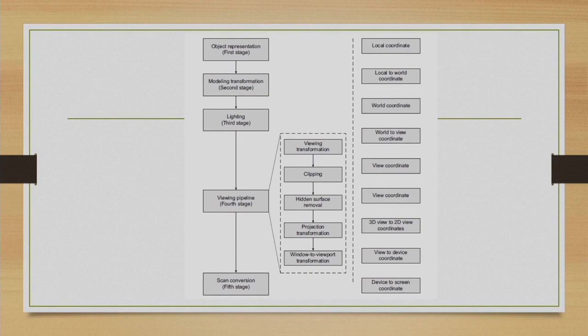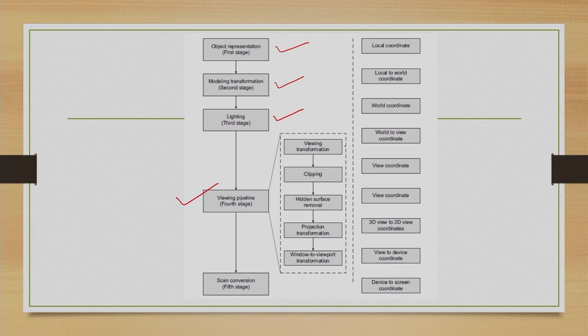Hello and welcome to lecture number 15 in the course Computer Graphics. As usual, we will start with a quick recap of the pipeline stages we are currently discussing. There are five stages in the graphics pipeline: first is object representation, second is modeling transformation, third is lighting or assigning color to surface points, fourth is the viewing pipeline consisting of five sub-stages: viewing transformation, clipping, hidden surface removal, projection transformation, and window to viewport transformation.